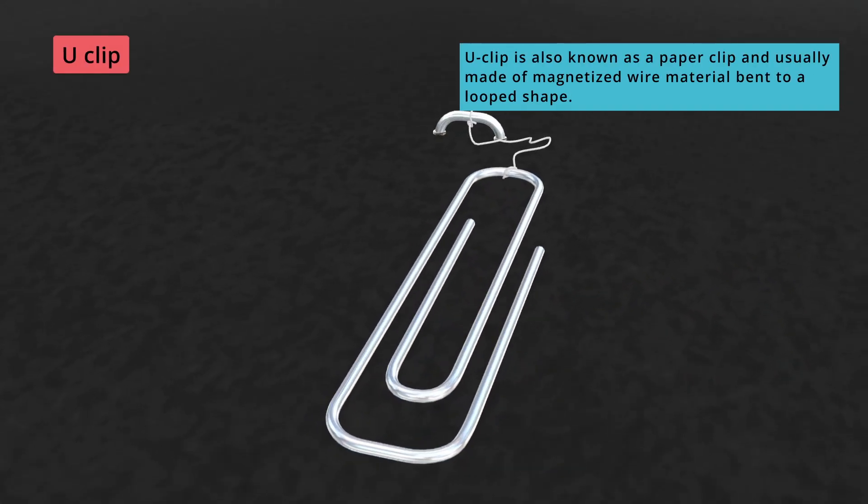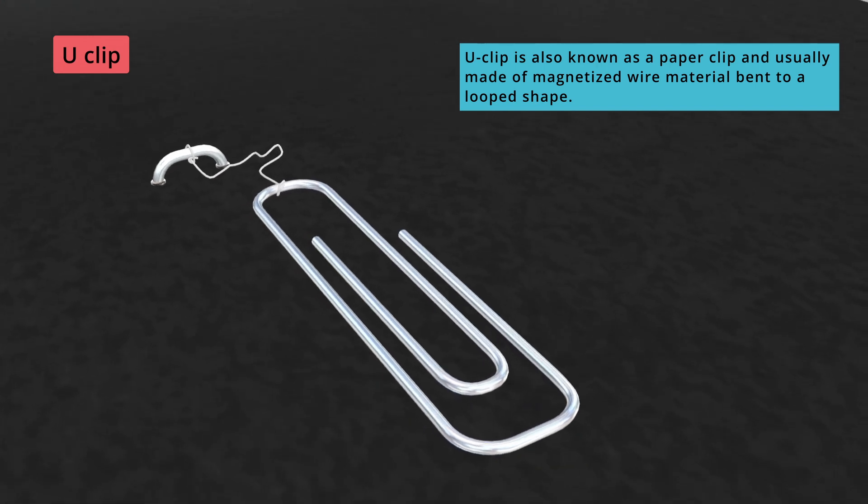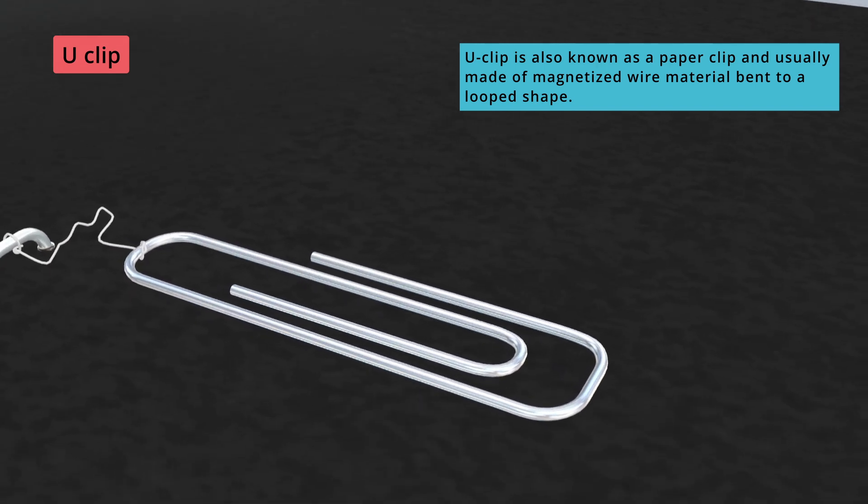U-Clip is also known as a paper clip and usually made of magnetized wire material bent to a looped shape.